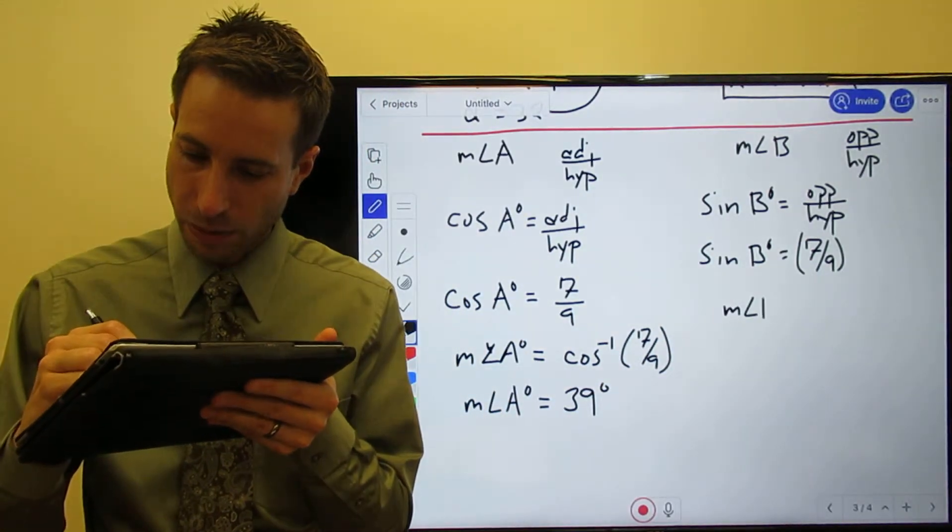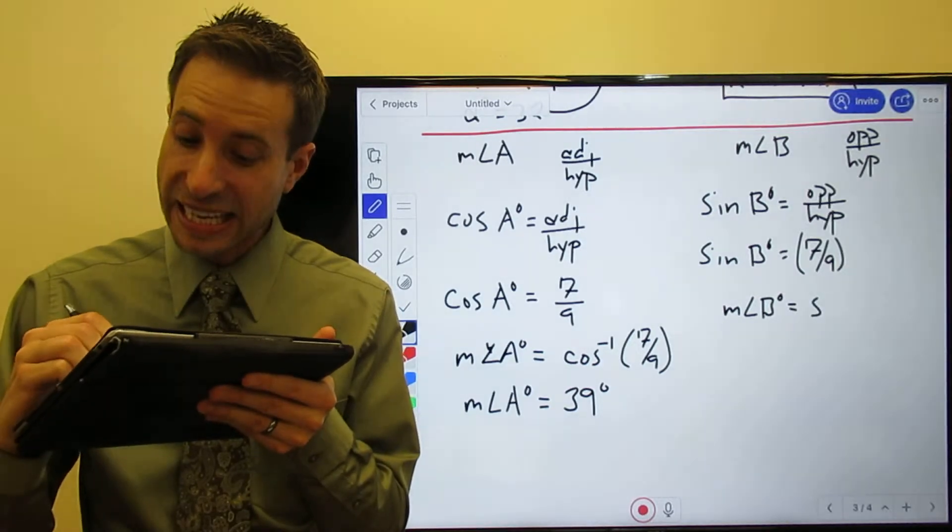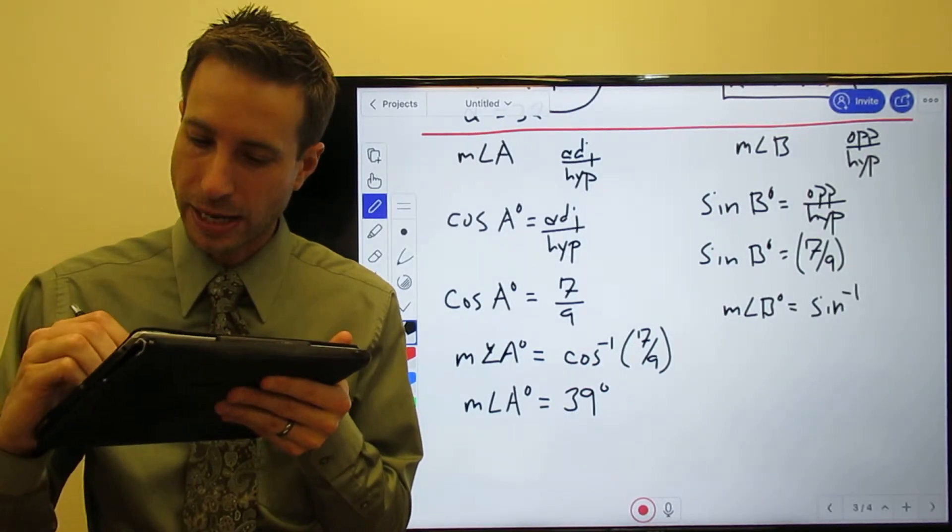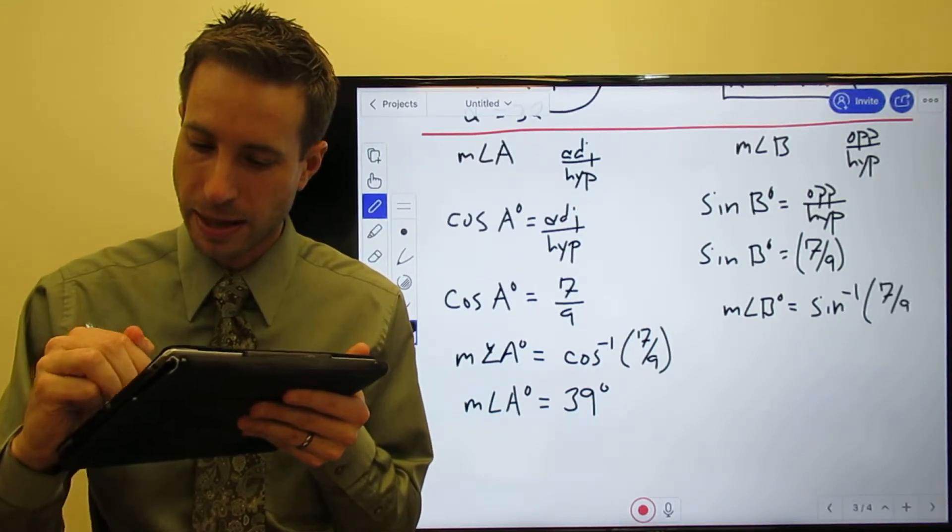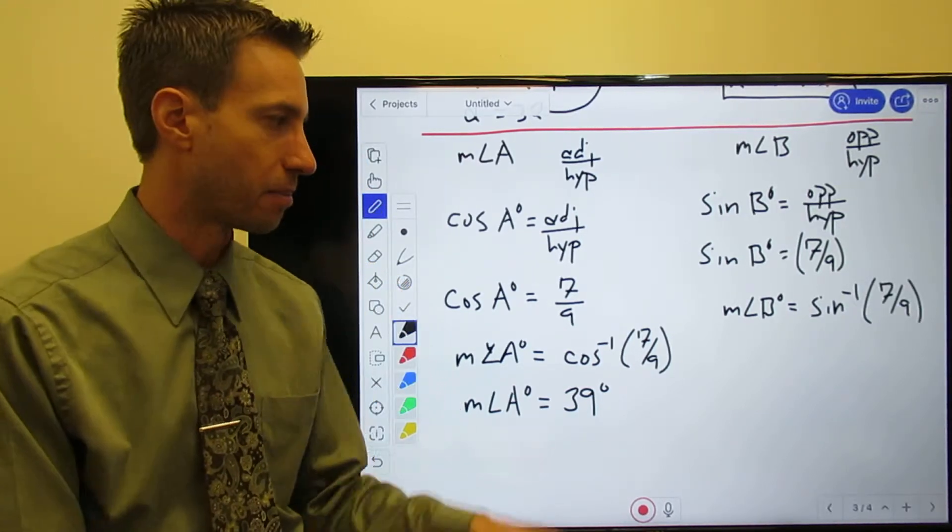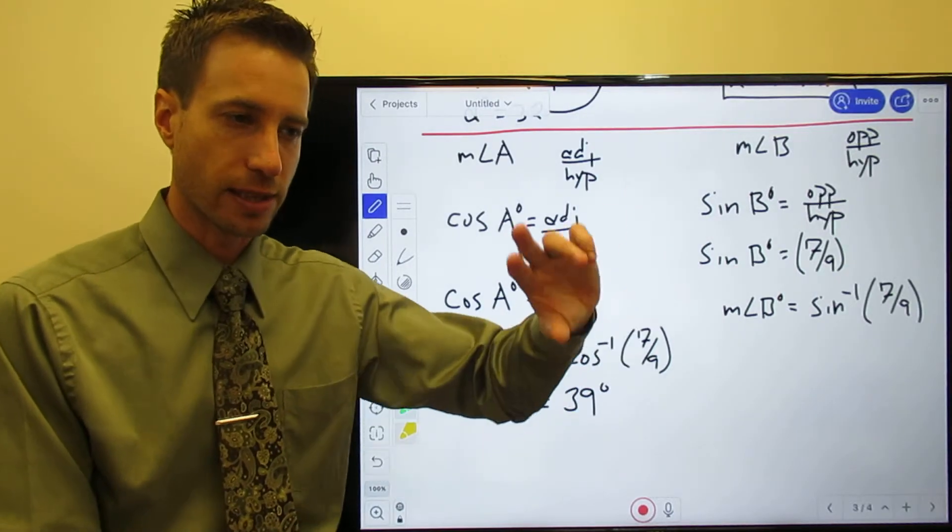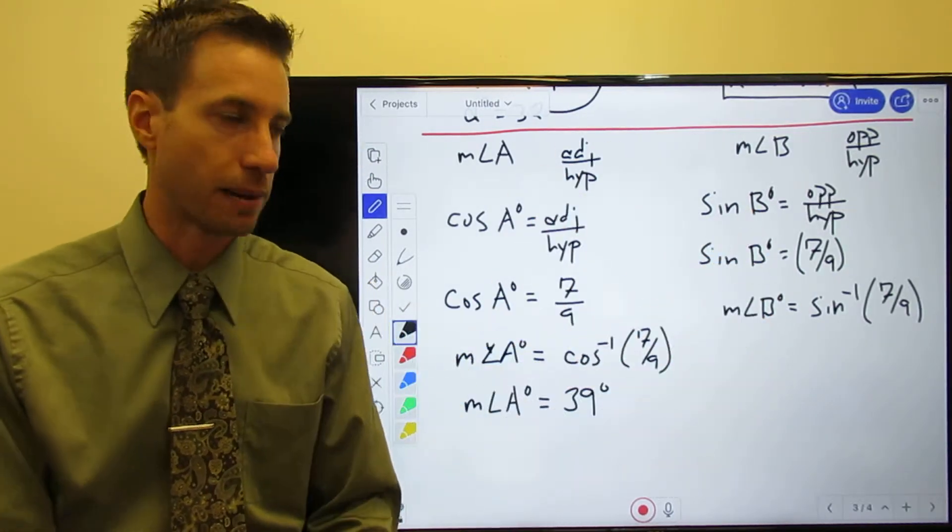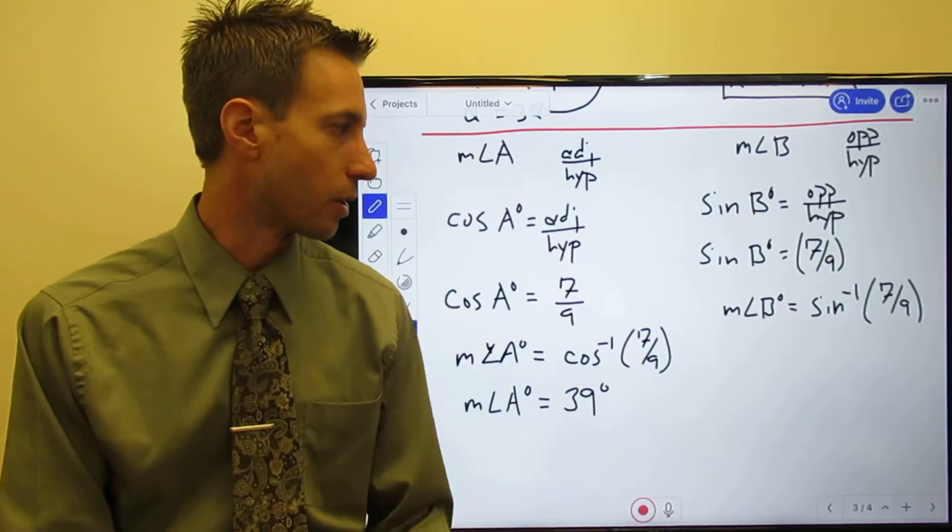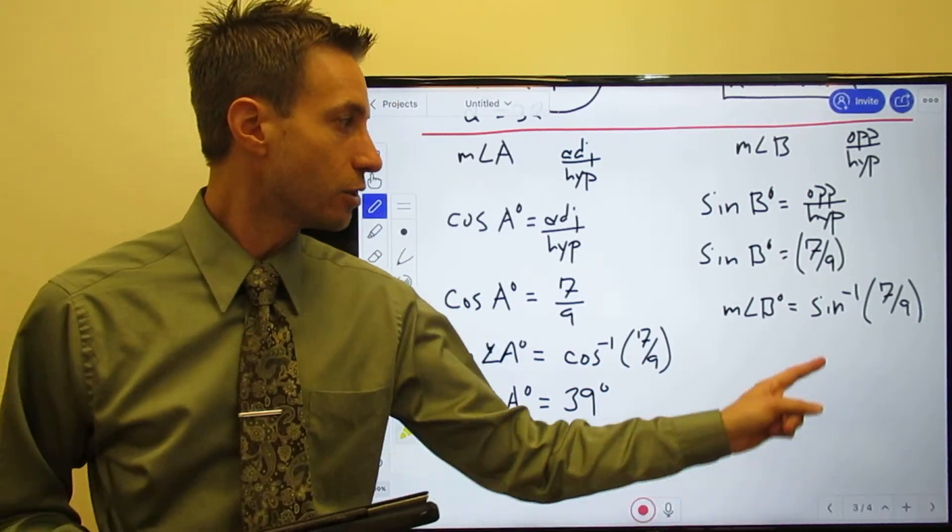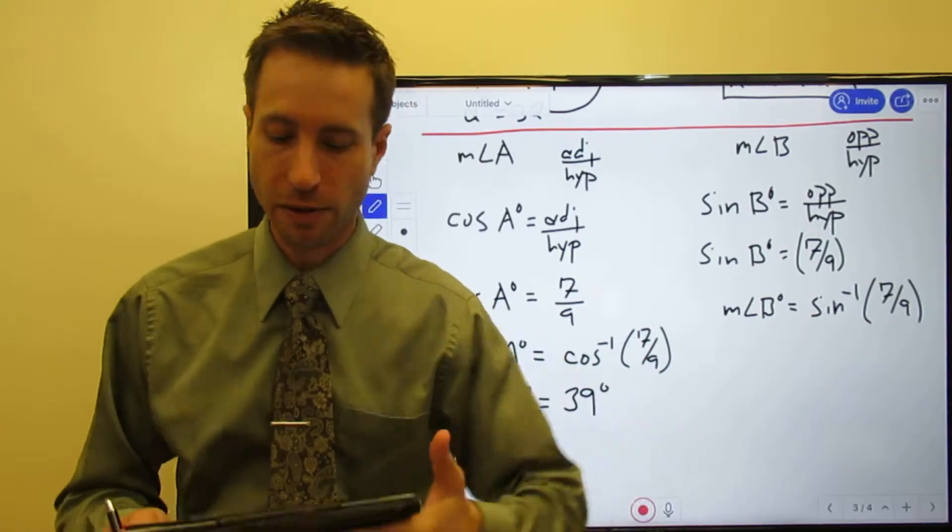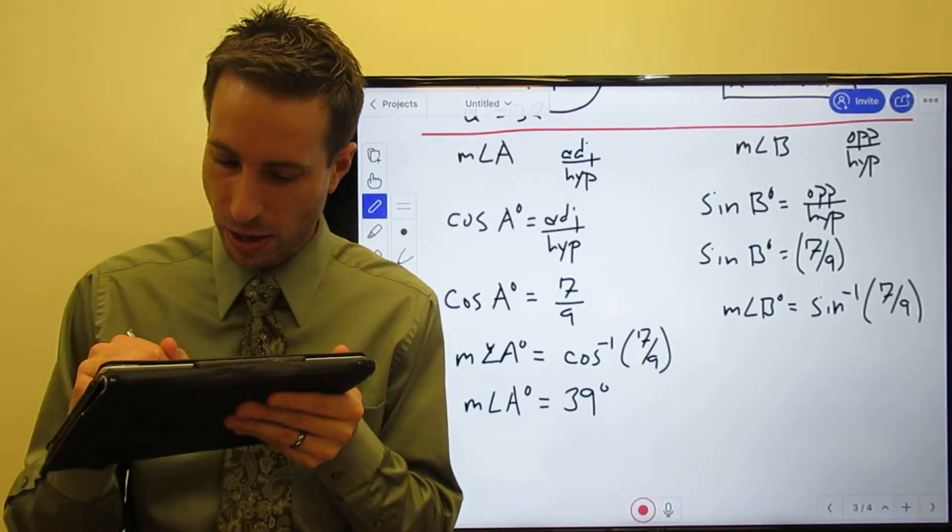So the measure of angle B will be the inverse sine - that's a button on your calculator, more than likely it's the second function. So it will still be the sine button, but you just got to hit a button before it that changes it to this color that's written above your sine button. It may be blue or green or yellow on your calculator; each calculator is a little different. Anyway, the point is: you do the inverse sine of 7/9, don't fat finger something on your calculator, and you wind up with the measure of angle B...